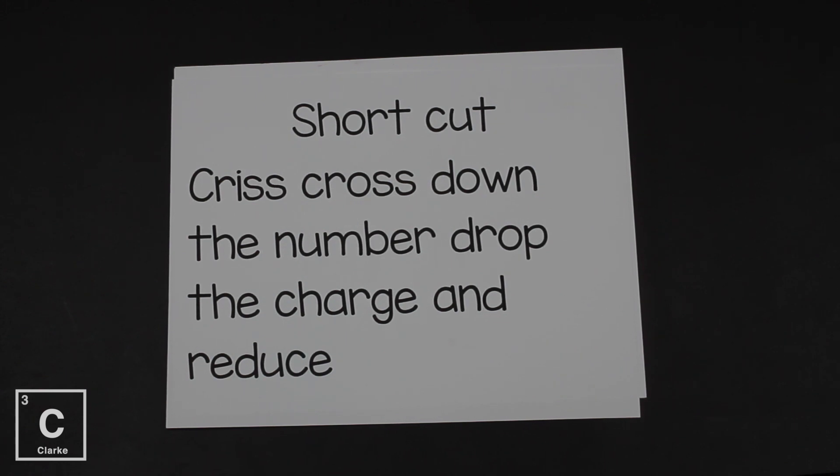Don't we wish there was a shortcut for that? We don't want to think about the math every single time equaling zero. Our shortcut is let's crisscross down the number. Let's drop the charge. You can't have negative elements. So we're going to forget the positive and the negative and only look at the number. Let's practice that.